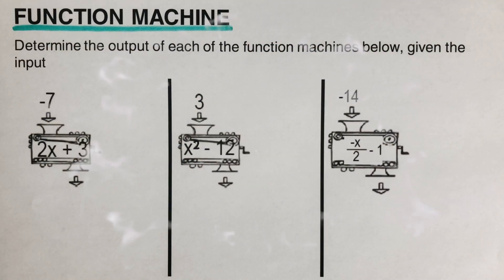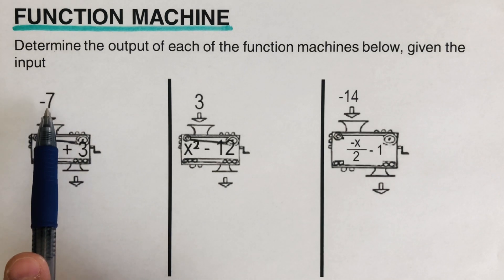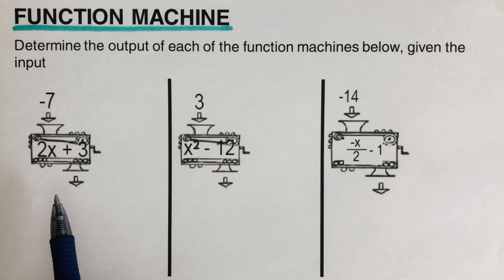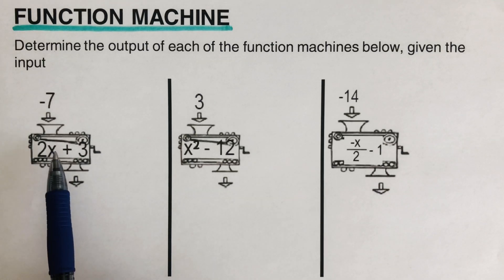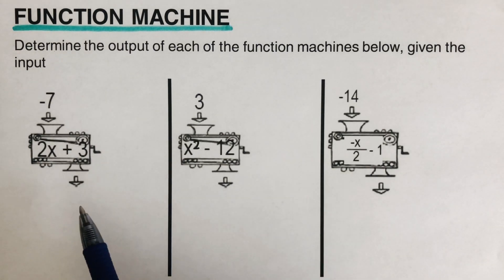In this video we're going to determine the output of a function machine. A function machine produces only one single unique output. If we drop in an input and the machine produces two or more outputs, then this machine is not a function — because the definition of a function is that for every input it has to have only one unique single output.